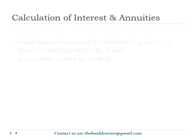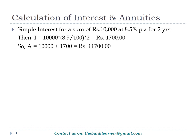Let us see some examples. For simple interest on a sum of Rs. 10,000 at 8.5% interest rate for a period of 2 years: P = 10,000, T = 2, and R = 8.5/100. By applying the formula, we get I = 1700 and A = 11,700.